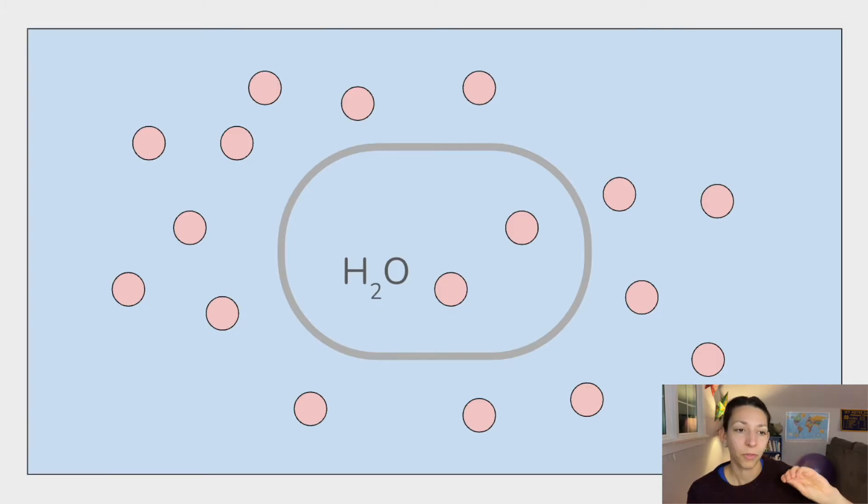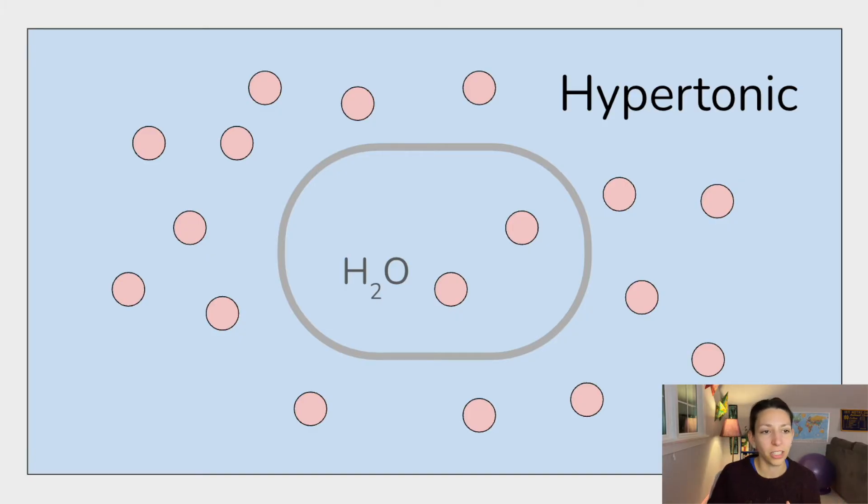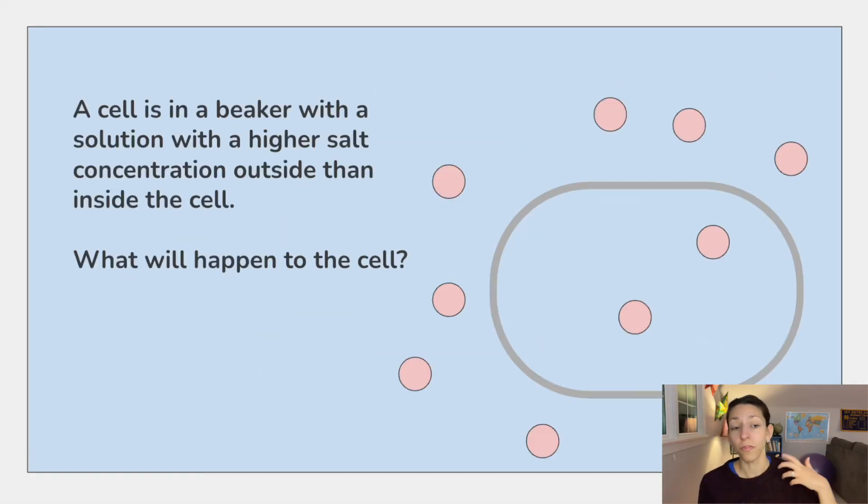Now in this environment, we have a higher concentration of particles outside the cell, lower concentration of particles inside the cell. This is called a hypertonic environment. Think hyper, like excited, like there's a lot, so there's more particles outside the cell. And again, water will move from a higher concentration of water to a lower concentration of water. So in this case, it will move out of the cell. The cell may even shrink.